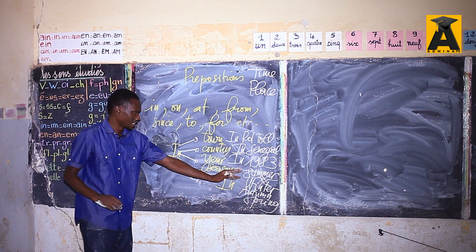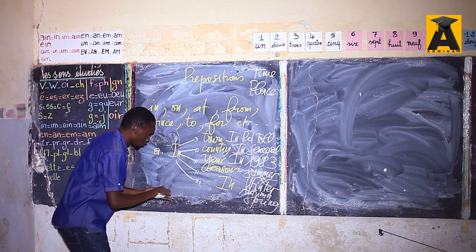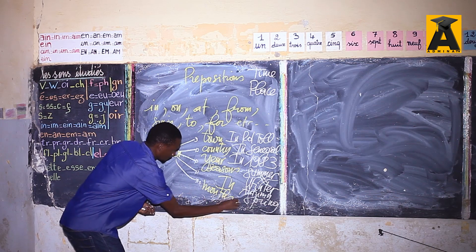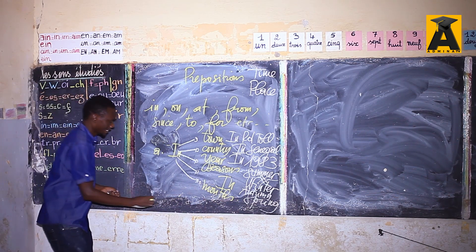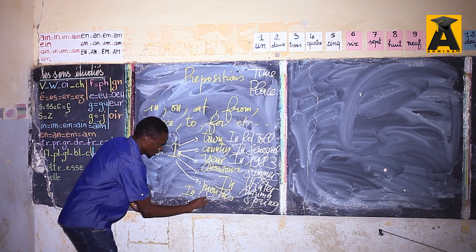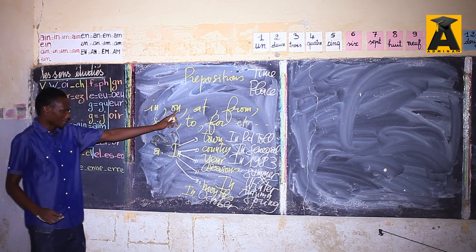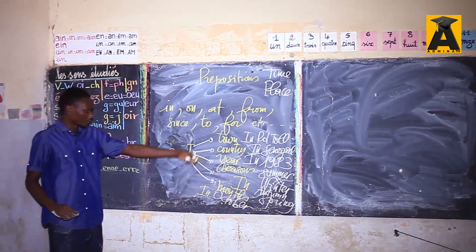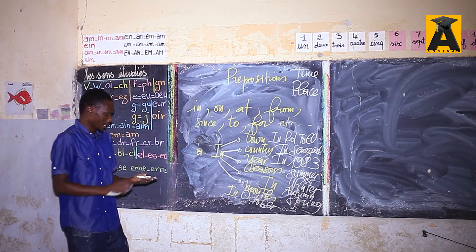The preposition 'in' also goes with months. You don't say 'on October,' you say 'in October,' 'in November,' 'in December.' For example: 'I take my vacation in June or July.' That's the use of 'in' with months.